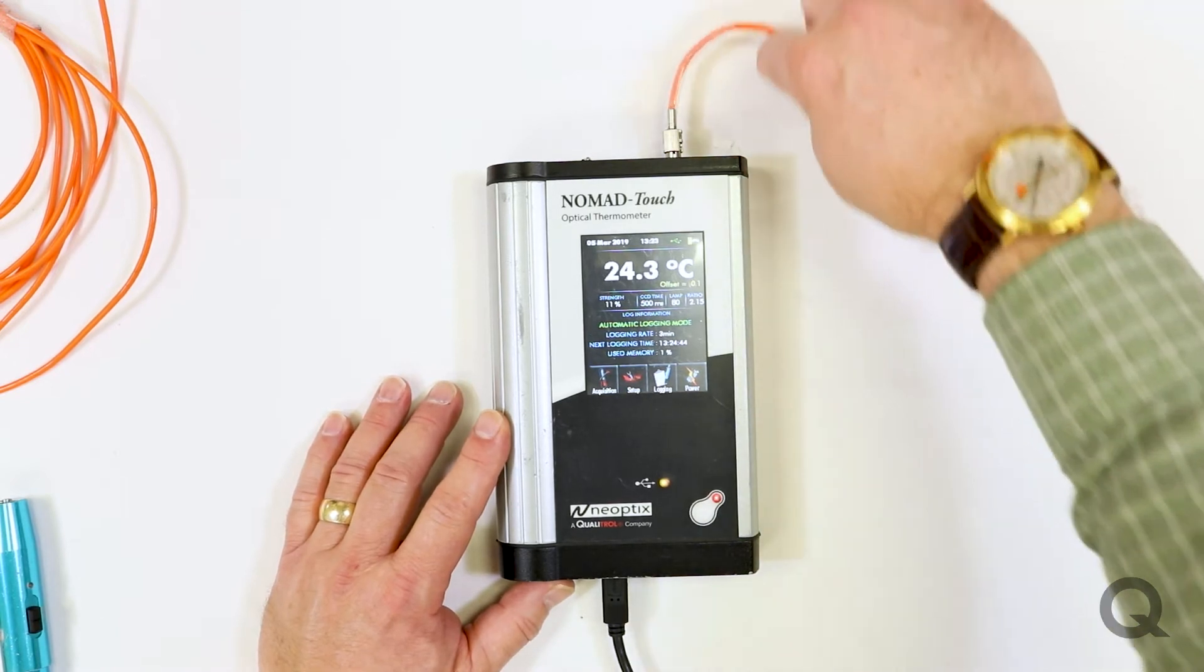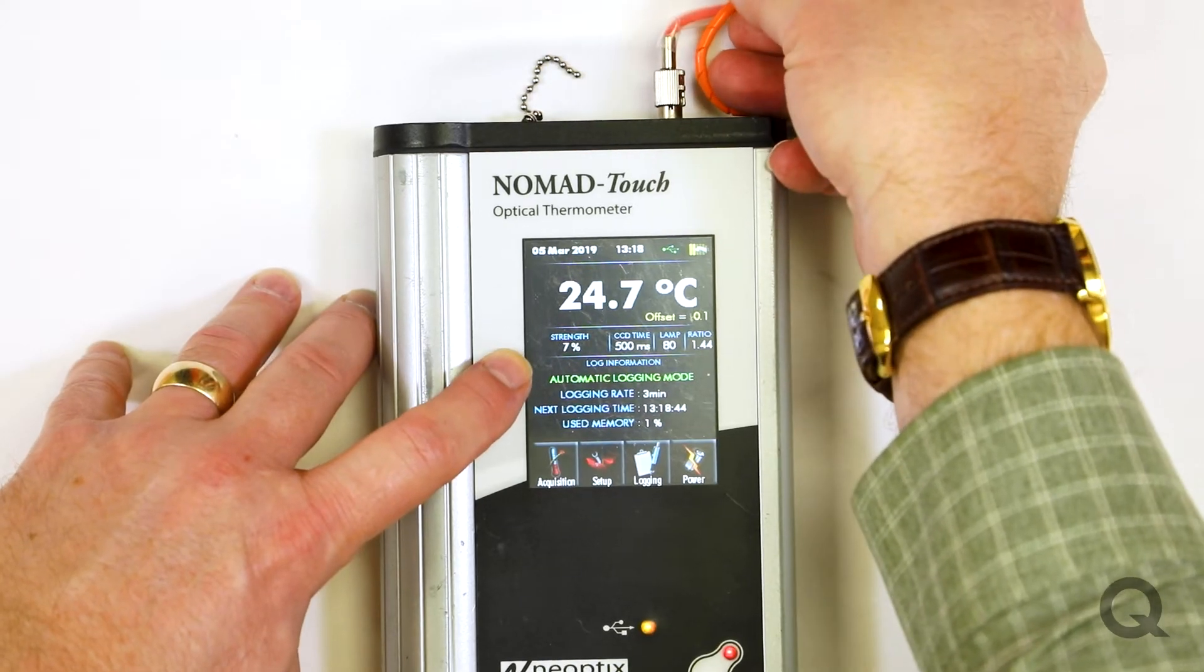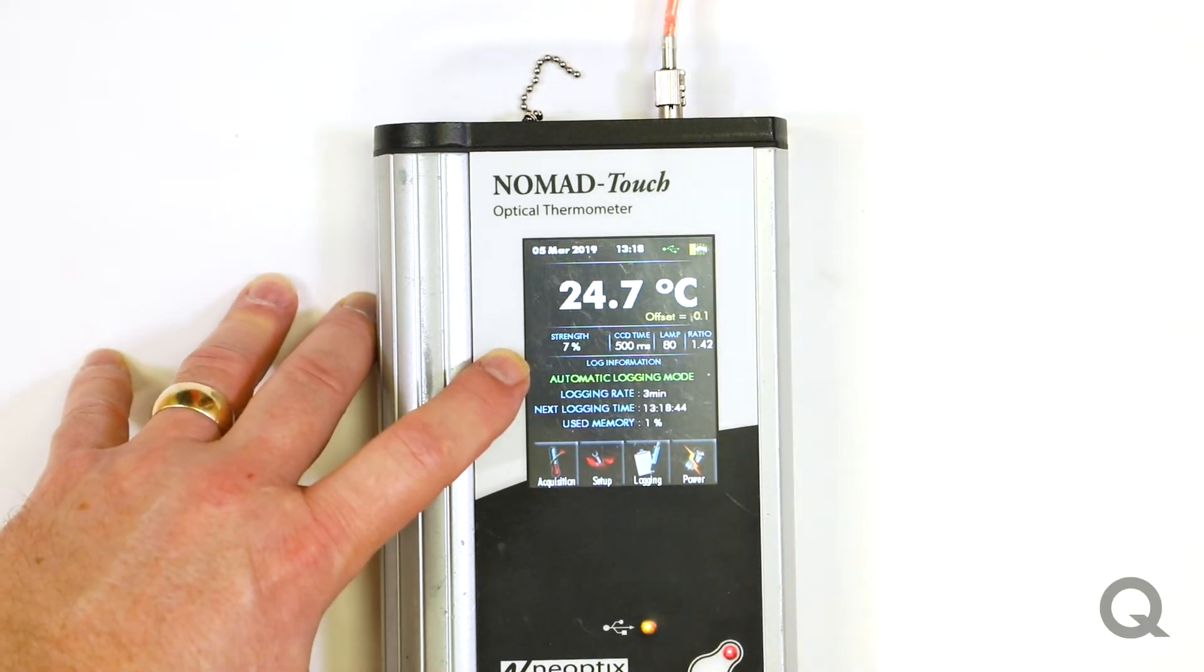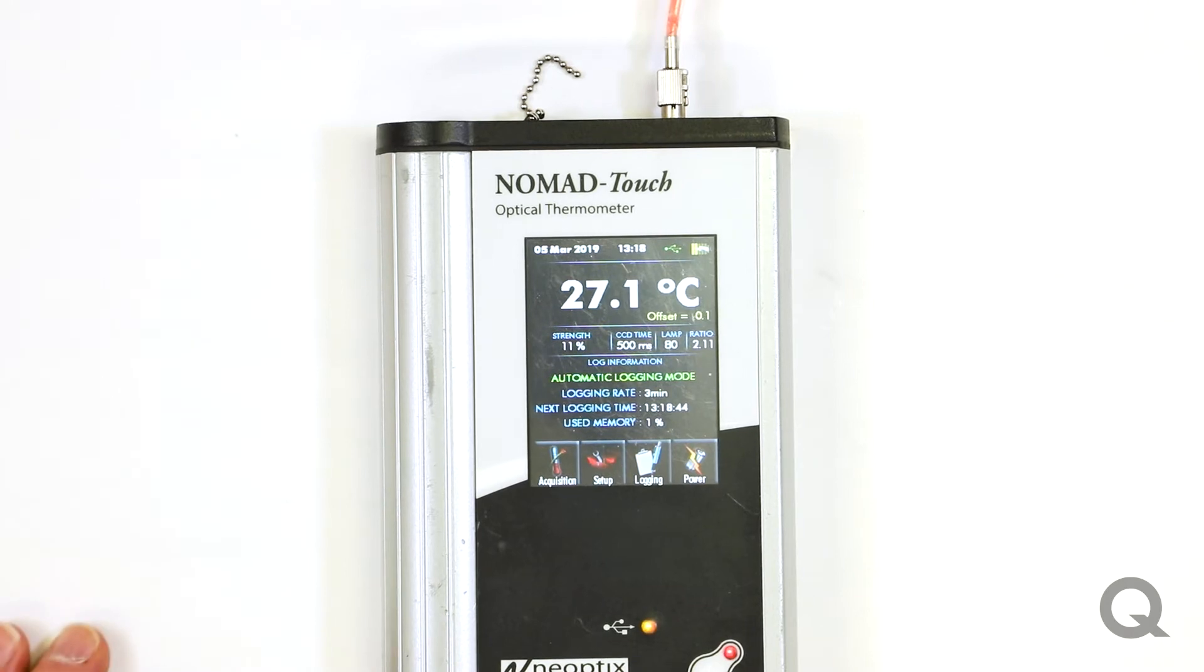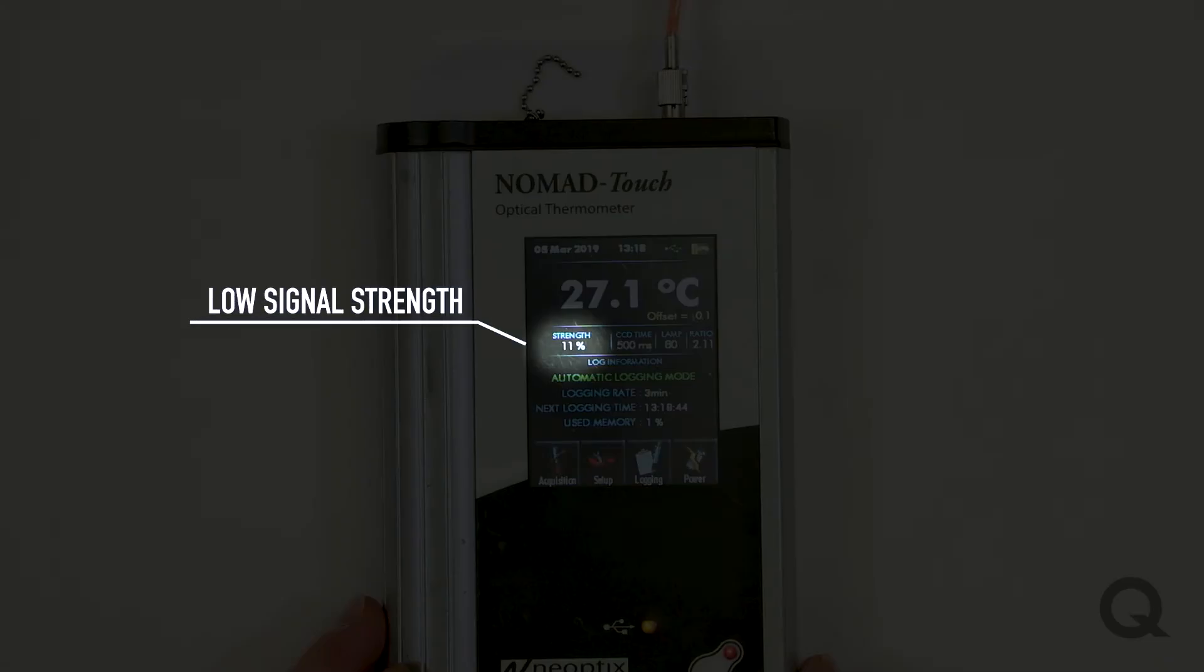For example, if you put too much bend in your optical fiber, your signal strength will drop to next to nothing. And if you release that, this is also a great diagnostic tool because, as you can see, this fiber has rather low signal strength.